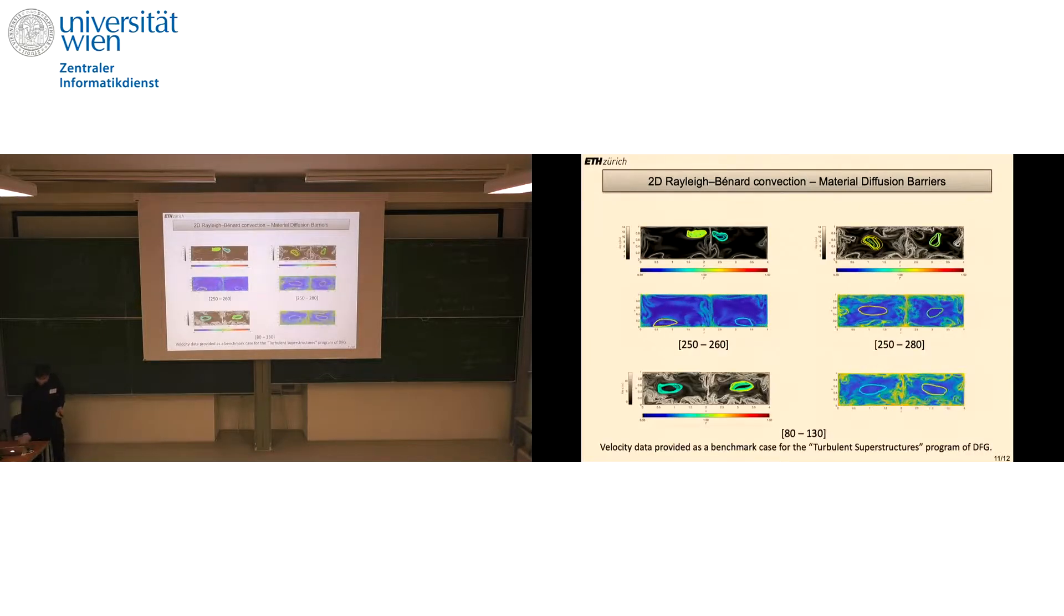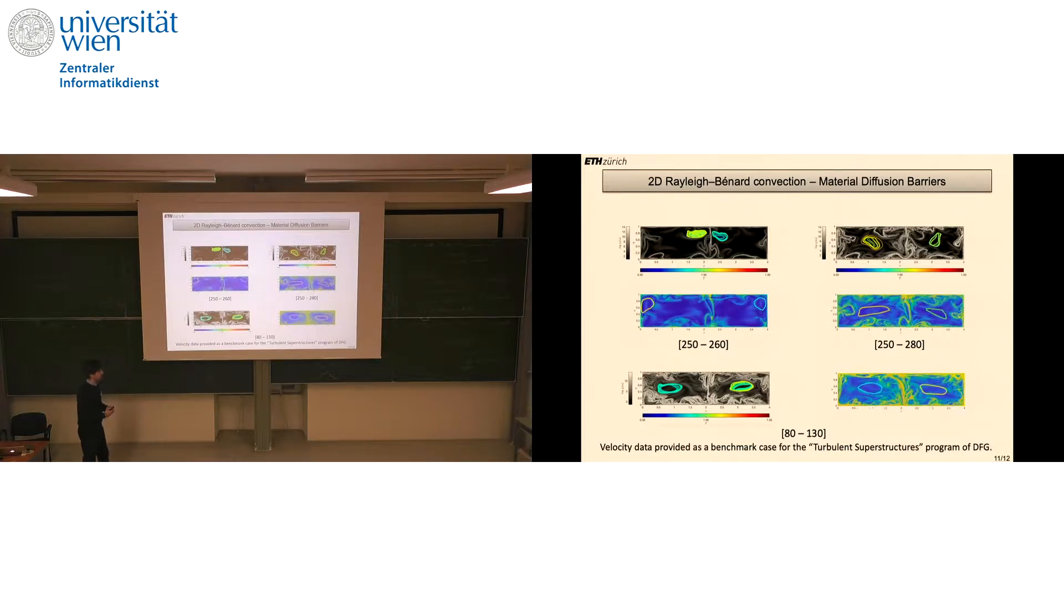This is a dataset we're involved with from a project from the National Science Foundation of Germany called Thermal Superstructures. We're trying to find superstructures. Before going down, because this is a very hard thing to do, they had uploaded a benchmark case: the Rayleigh-Bernard convection case, which is an idealized model for thermal convection. We have a hot plate down here, a cold plate above, and fluid in between. From physical arguments, we know that after some time, we would have the formation of these roll structures.